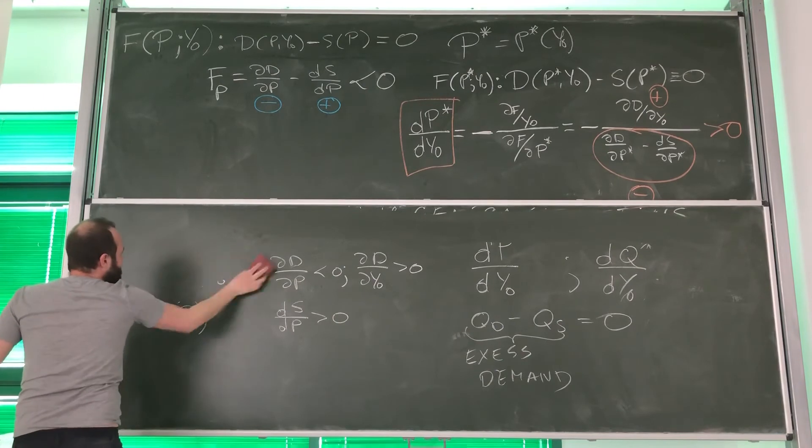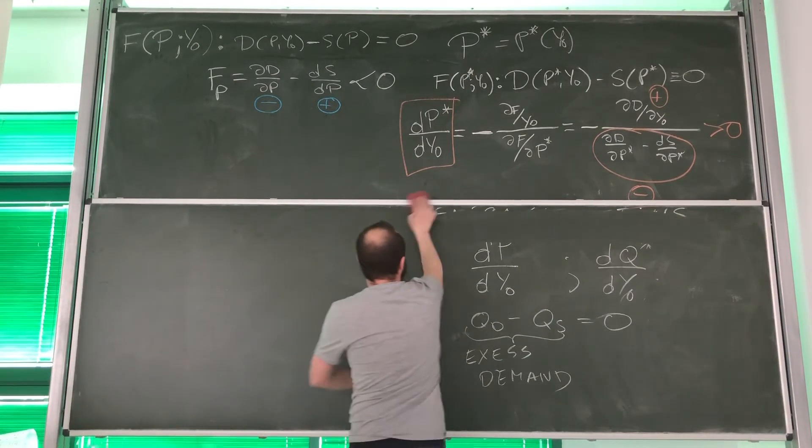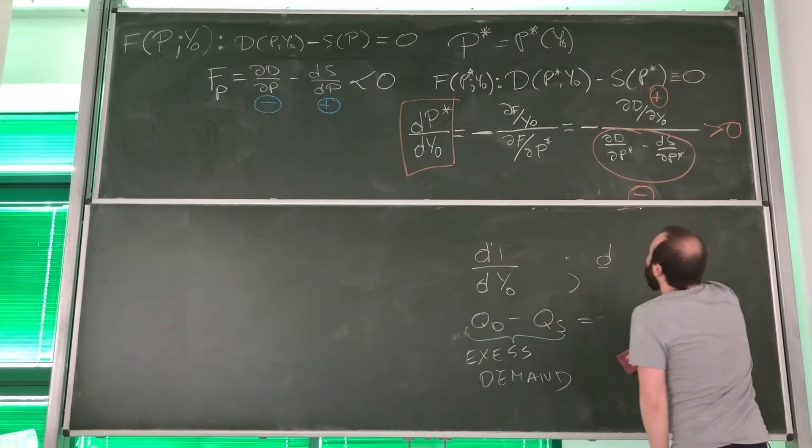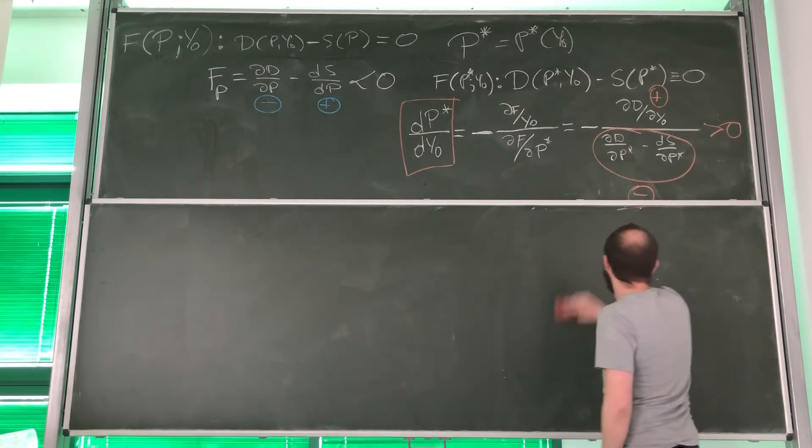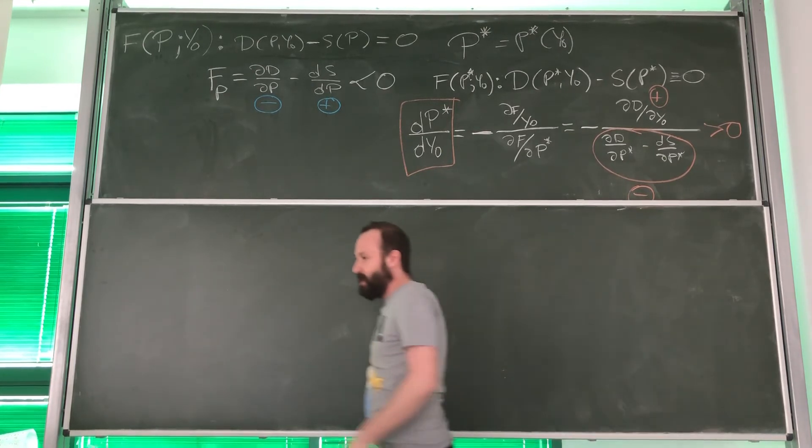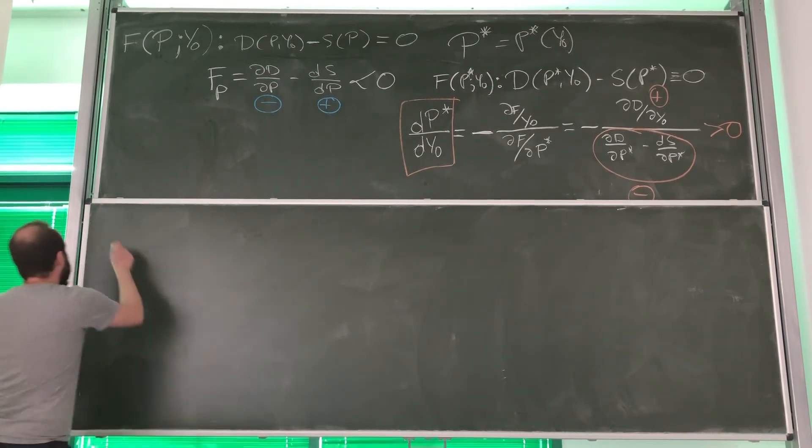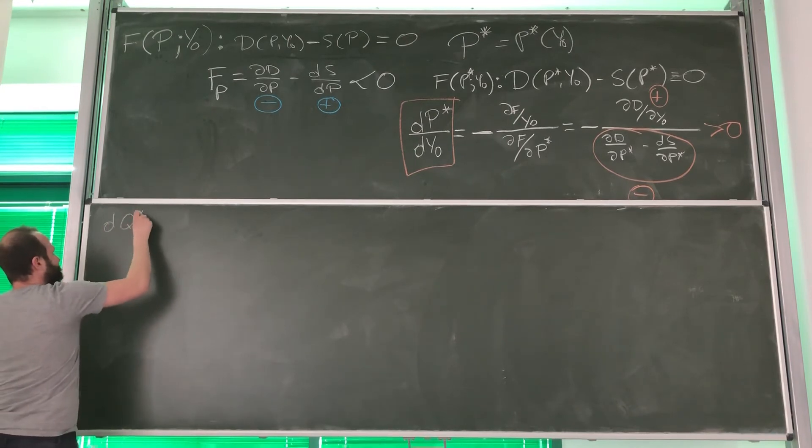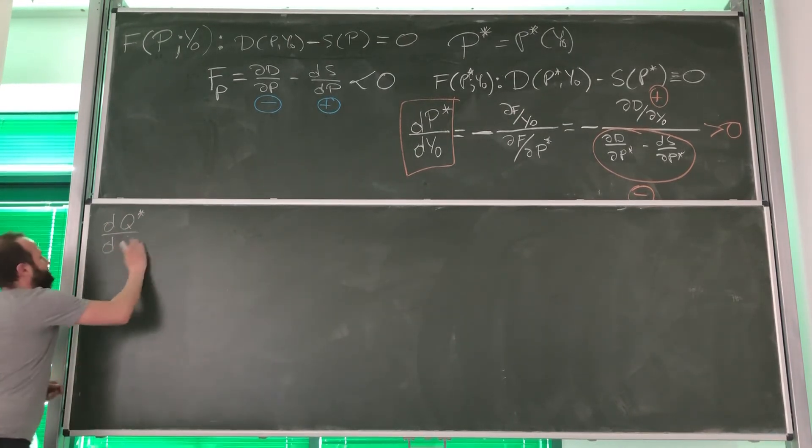Okay. Now, the second thing we were supposed to find is derivative of equilibrium quantity with respect to income. Later we will learn how to calculate them both at the same time. However, let's just notice one thing.